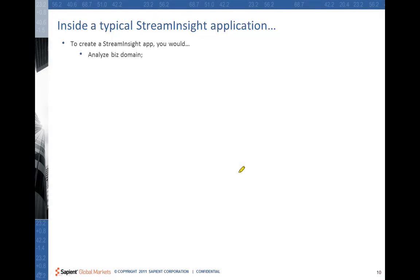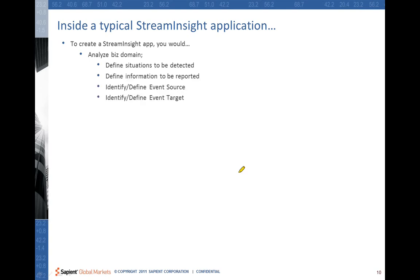Let's look at how a typical Stream Insight app will look. To create a Stream Insight app, as a first step you analyze the business domain. You define the situations to be detected first — these situations could lead to an opportunity or a threat, and they will be defined as patterns in the CEP world, or as query templates in the Stream Insight world. Then you define the information to be reported — what additional information should be part of the output event as the complex event information.